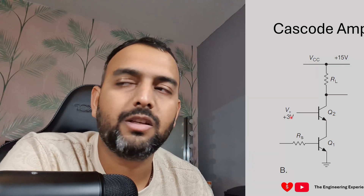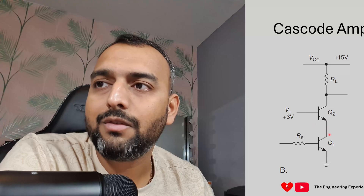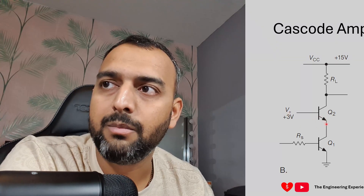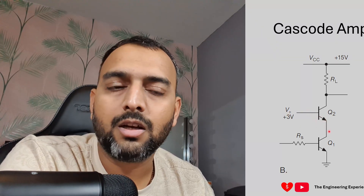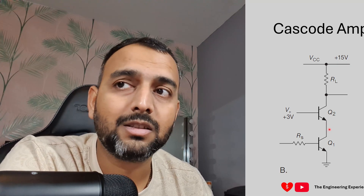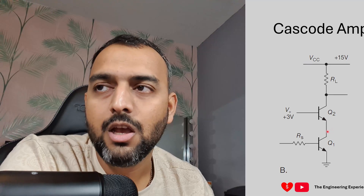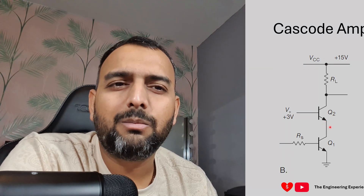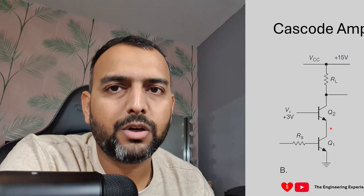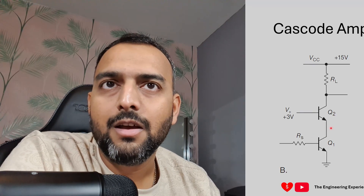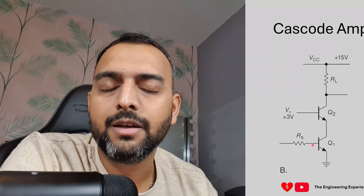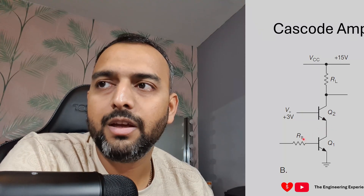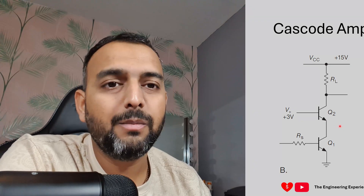With the base of Q2 fixed at 3 volts, the collector of Q1 — which is also the emitter of Q2 — will be fixed at 3 volts minus the VBE voltage, roughly 0.6 to 0.7 volts, giving approximately 2.3 to 2.4 volts. This voltage is relatively fixed. If the collector voltage of Q1 is fixed, it effectively negates the Miller effect that occurs between the base and collector of Q1 due to the parasitic capacitance between those two nodes.